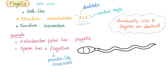Let's turn our attention to flagella. Structurally, cilia and flagella are identical — there may be some differences in how many there are and the way they move, but structurally they are the same. Flagella in Latin means a whip-like structure. Same arrangement: 9 plus 2 — nine doublets plus two central single microtubules. Their function is locomotion. For example, the bacterium Helicobacter pylori has flagella. Your sperm has a flagellum, and it provides the sperm with propeller-like movement.